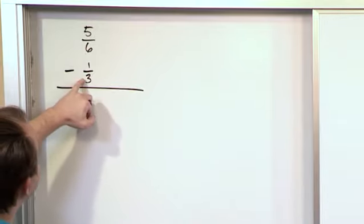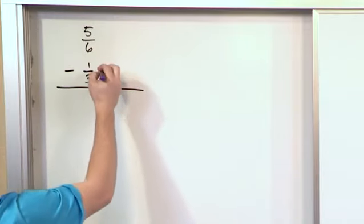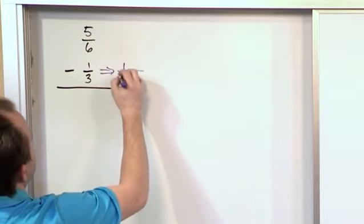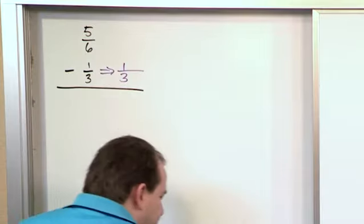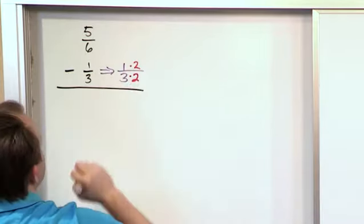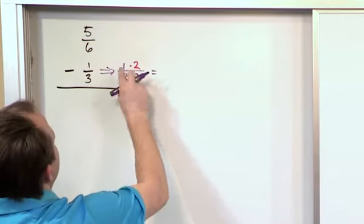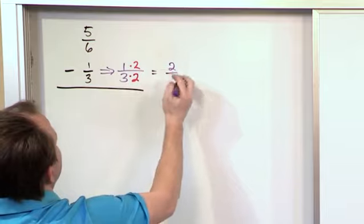Now since I know that 3 times 2 is 6, I can get a common denominator of 6 here which will match this one. The way I do it is I say 1 third and what I'll do is I'm basically going to multiply the bottom by 2 and the top by 2. And what that's going to do on the top, 1 times 2 is 2. On the bottom we get 6.